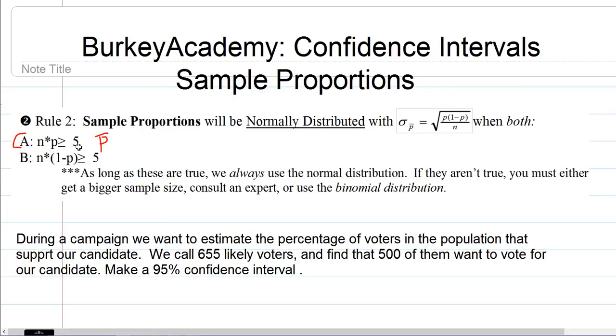Also, the sample size times 1 minus p has to be at least 5. What we're doing here is checking to see if our sample size is big enough. When you take larger and larger samples and calculate the sample proportion, the bigger your sample size is, the central limit theorem is what allows us to do what we're doing here. Central limit theorem says that with larger samples, sample proportions will have a normal distribution.